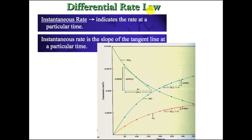A rate law is a law just like any other law we see in science. It's just going to describe what's happening — it's not going to tell us why things are happening, just describe it. So how do we figure out what the rate law is based on experimental data?